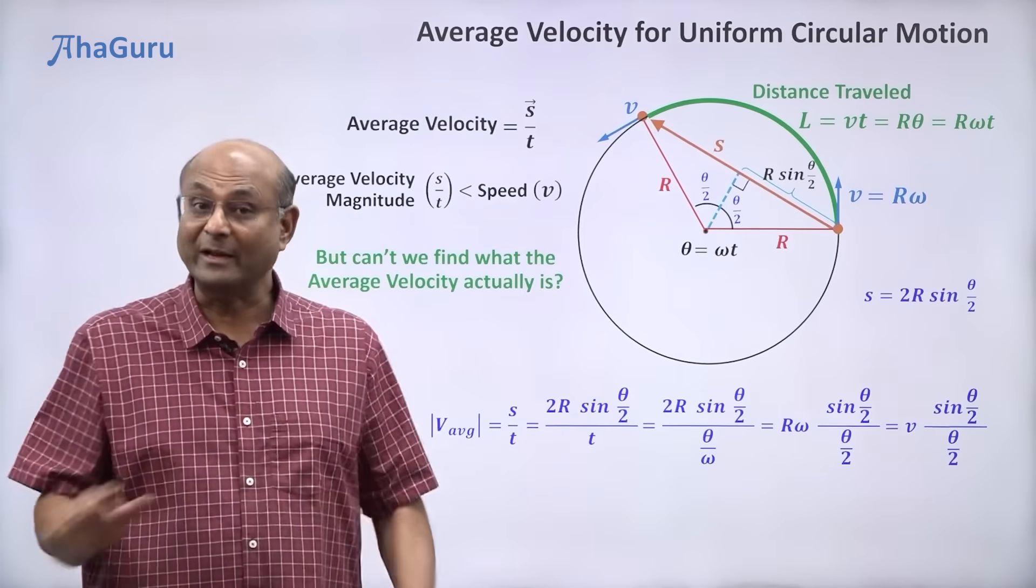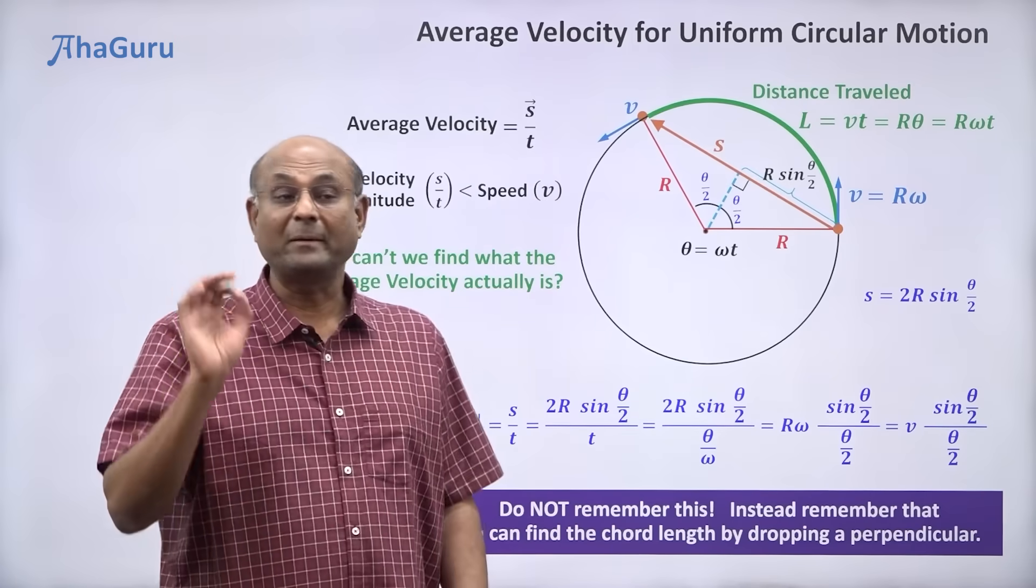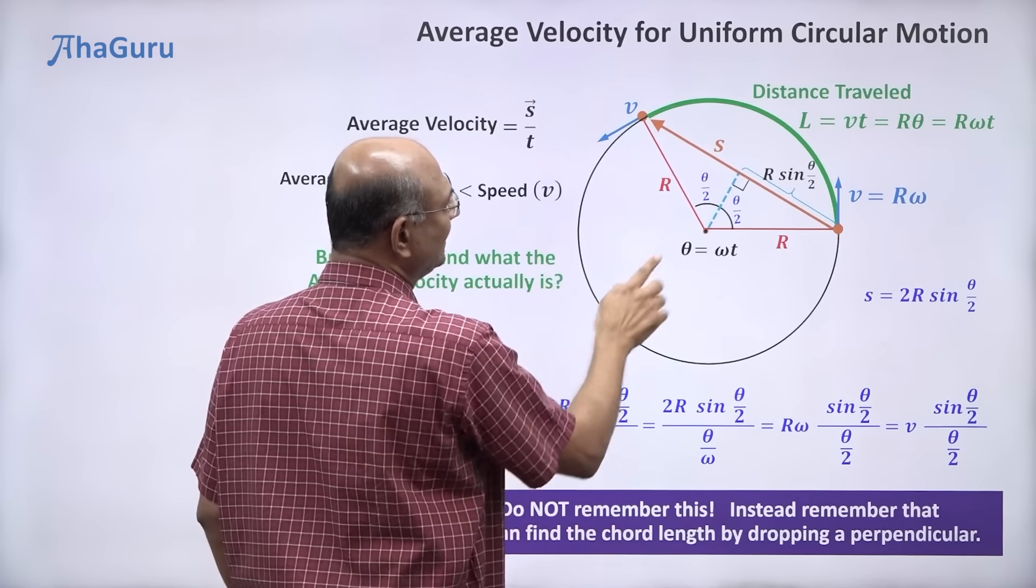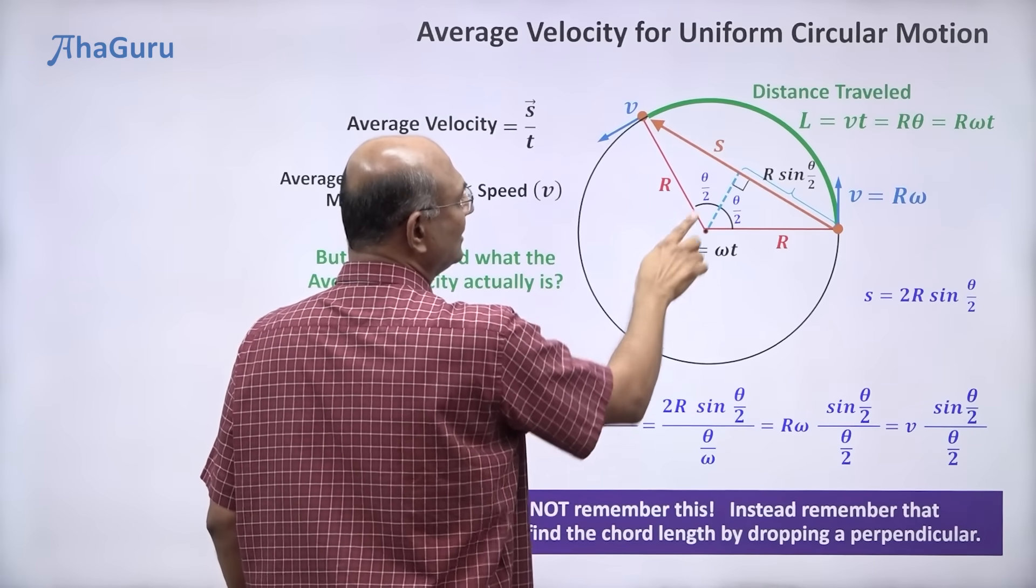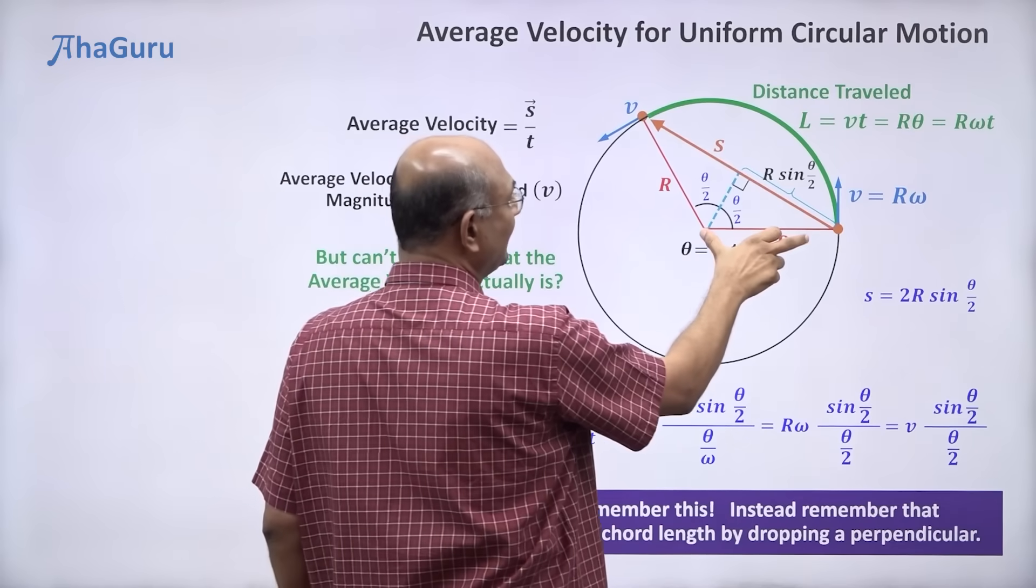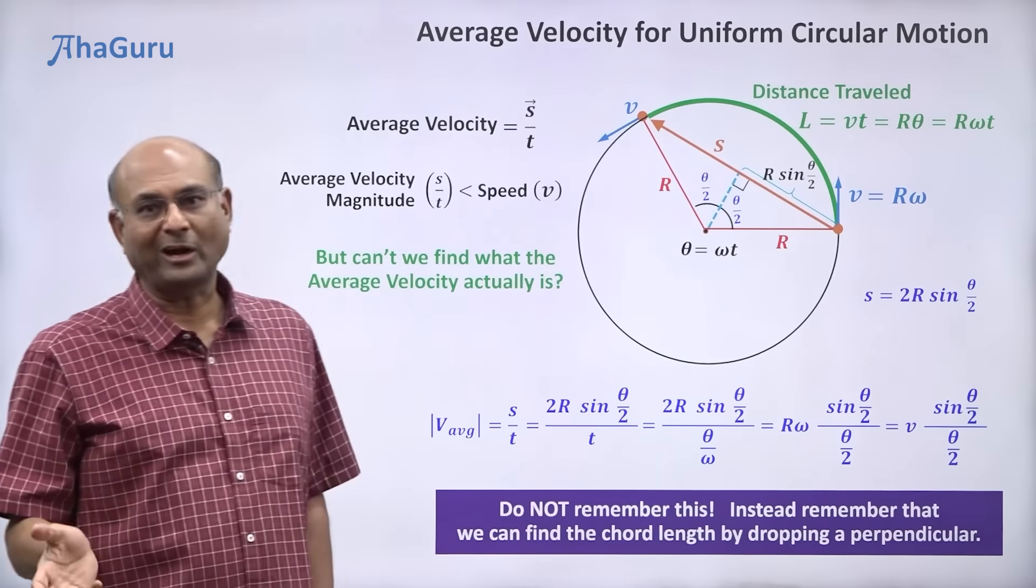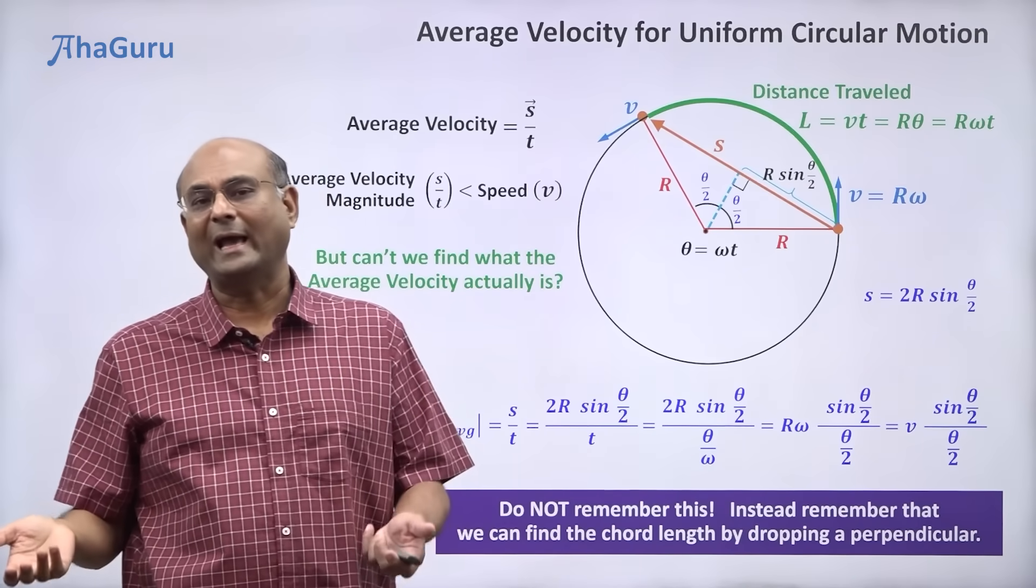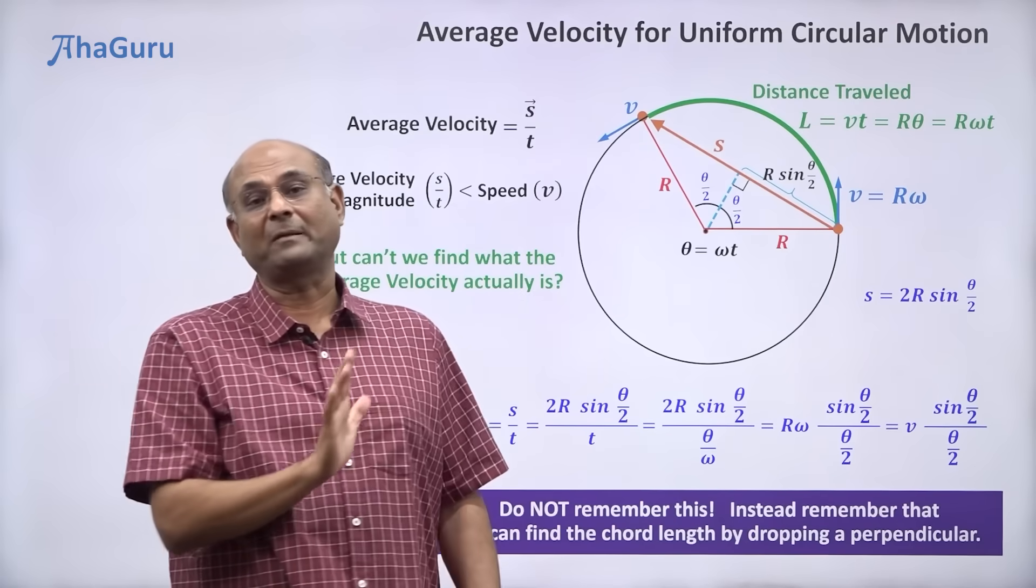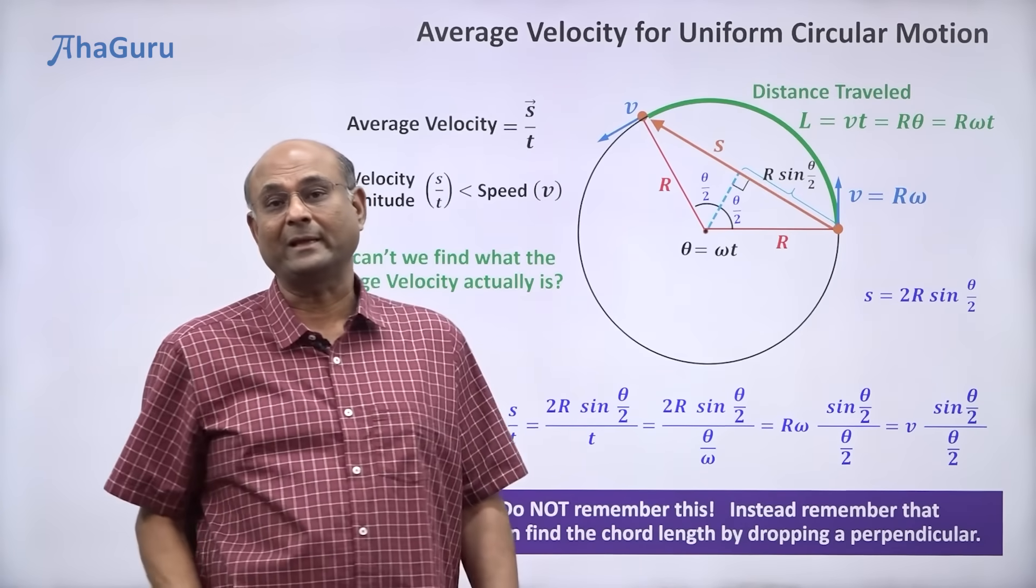Now do you need to remember this? Absolutely not. Please do not remember this formula. Instead, remember that whenever you need, you can always find the chord length by dropping a perpendicular. It is an isosceles triangle. So drop a perpendicular and you can find out that using Pythagoras theorem. r sin theta by 2, 2 times. That gives you the chord length. And then chord length divided by time will give you the average velocity magnitude. So always derive it from the basics. You will find that that is going to be a lot easier than remembering something like this.